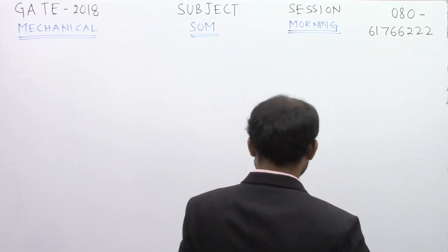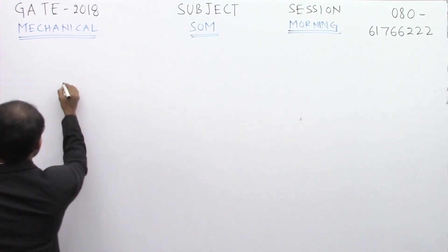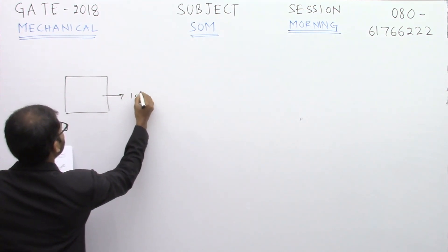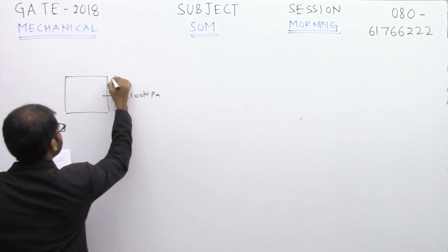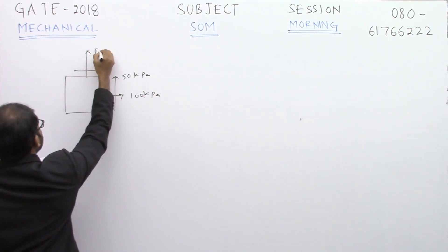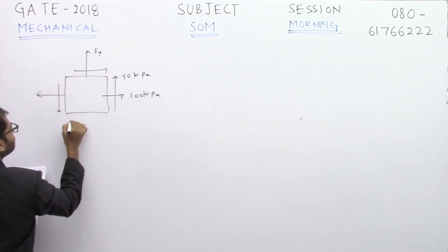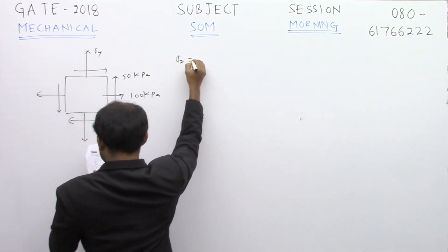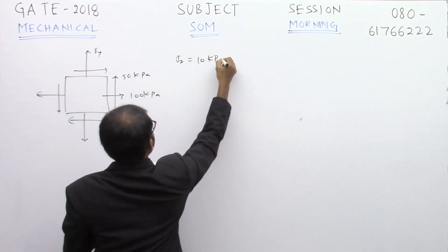We have given the plane stress condition like this. We have sigma x to be 100 kilopascal, tau xy to be 50 kilopascal. We are not given with sigma y here, but sigma 2 is given. Sigma 2 is actually given as 10 kilopascal here.